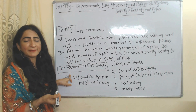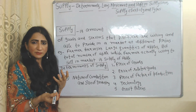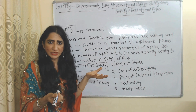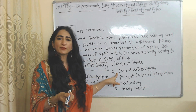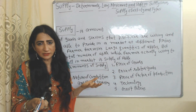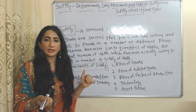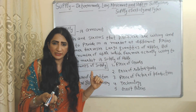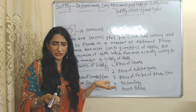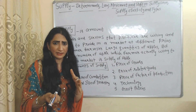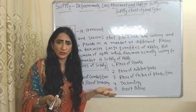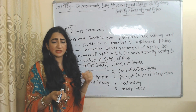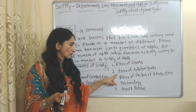Now we will see the determinants of supply — factors which influence supply. The first is the price of goods: when the price of goods increases, supply also increases; when price falls, supply also falls. Supply is also influenced by prices of related goods. For example, when prices of fuel increase, the cost of running a car increases, people prefer public transportation, demand for cars reduces, and eventually supply also reduces.